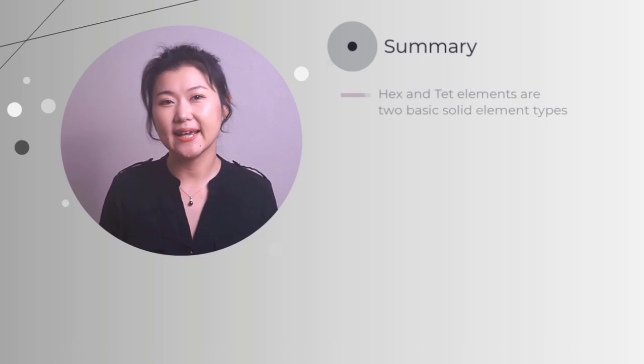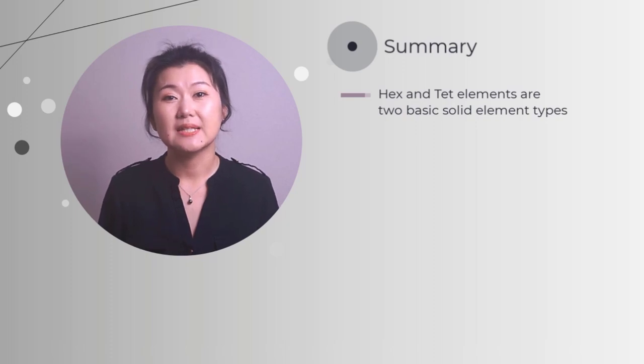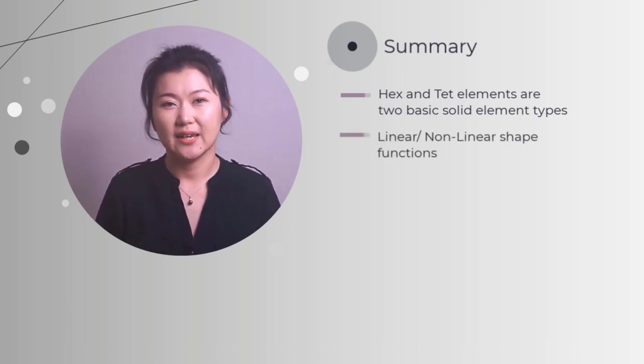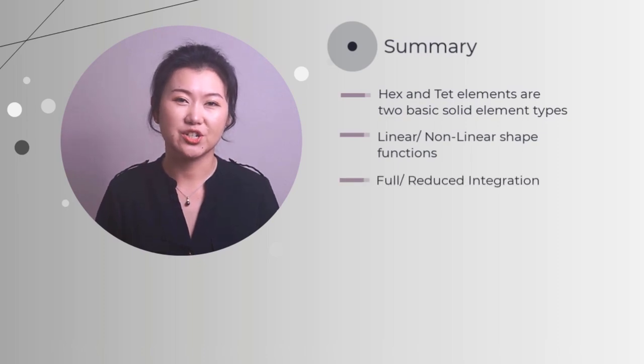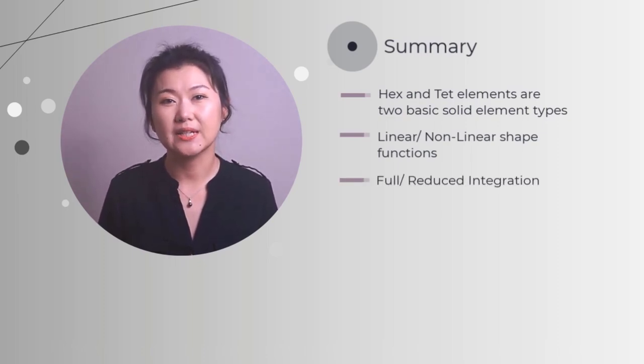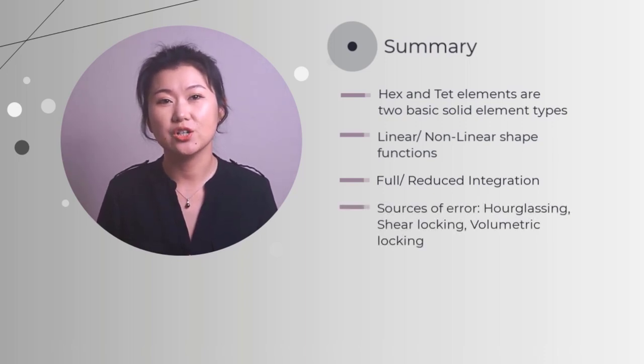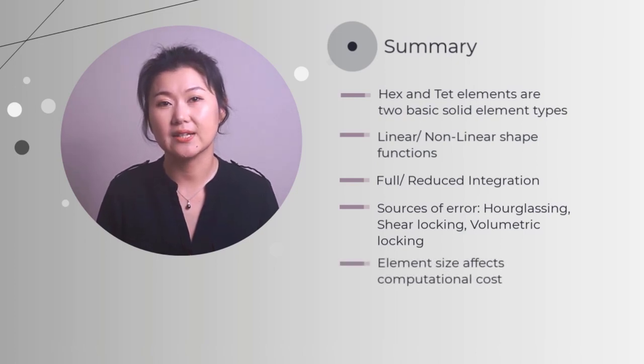To sum up, hex elements and tetrahedral elements are two basic types of solid elements in explicit dynamic analysis. These elements can use linear or non-linear shape functions, and they can use full integration or reduced integration. When choosing an appropriate element type, we need to know the possible drawbacks for a certain type of element and evaluate results to identify possible sources of errors, for example, hourglass, shear locking, and volumetric locking. Also, we need to mesh the domain with computational cost in mind, because the element size directly affects the critical time step size in explicit dynamic analysis. I hope that you find this video informative. Don't forget to visit courses.ansys.com to discover more useful courses.